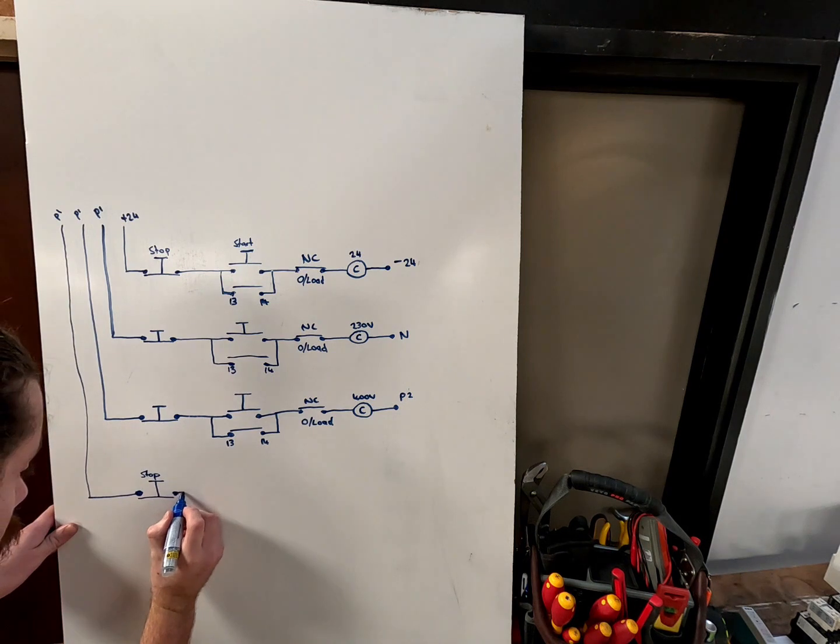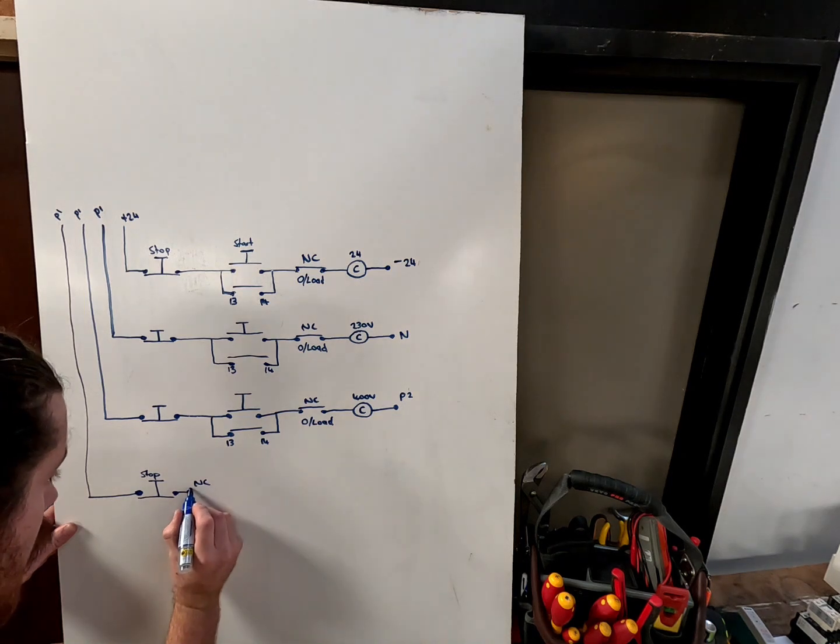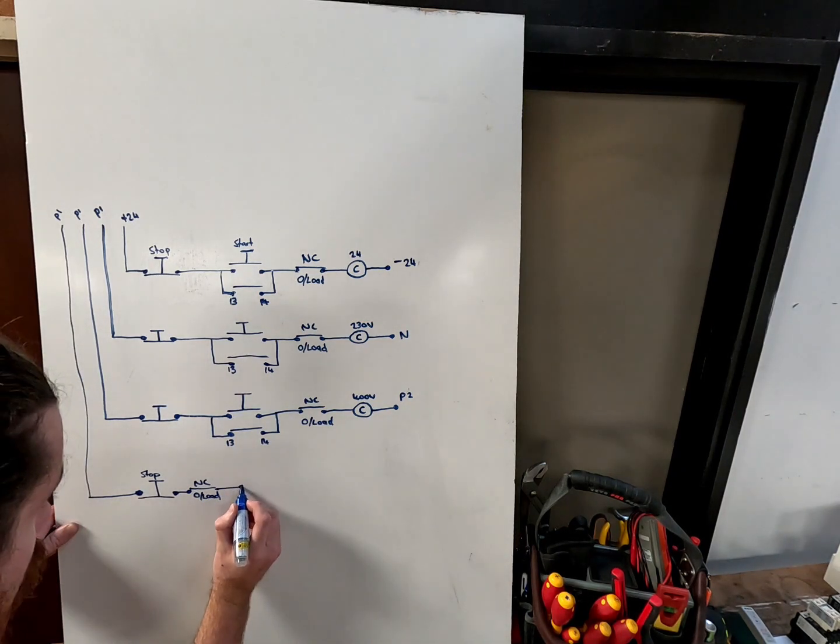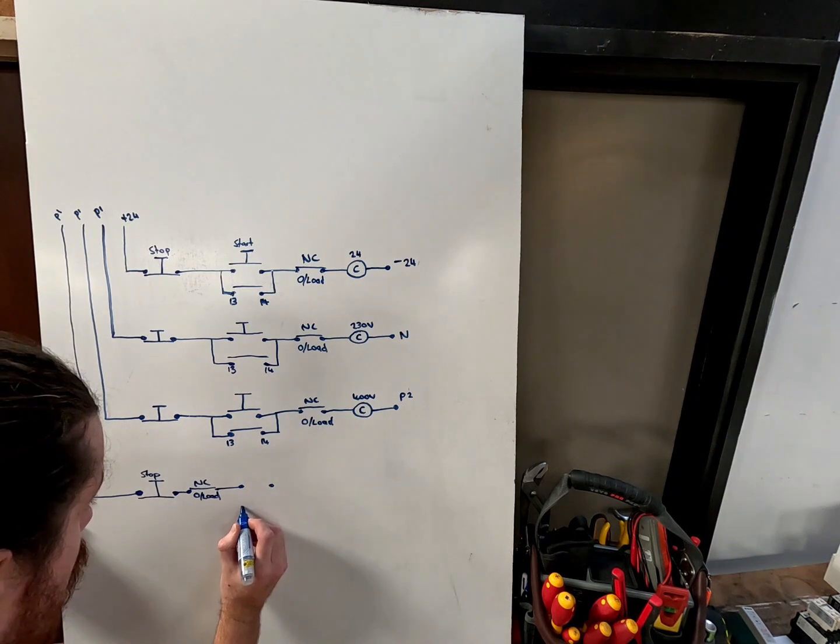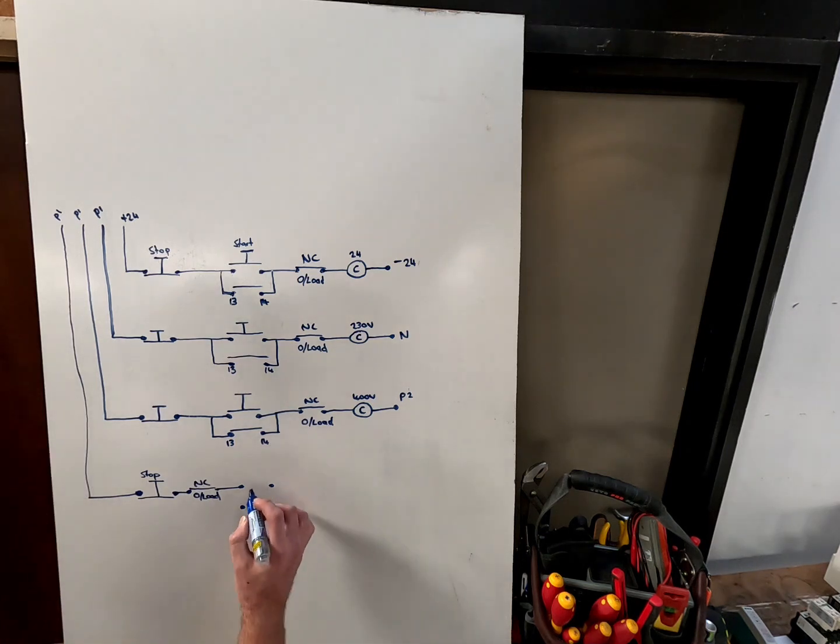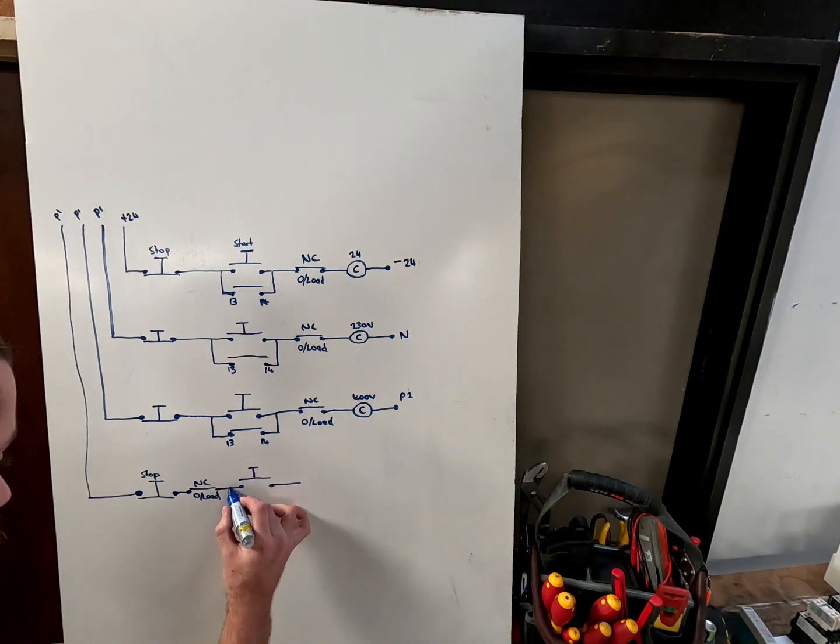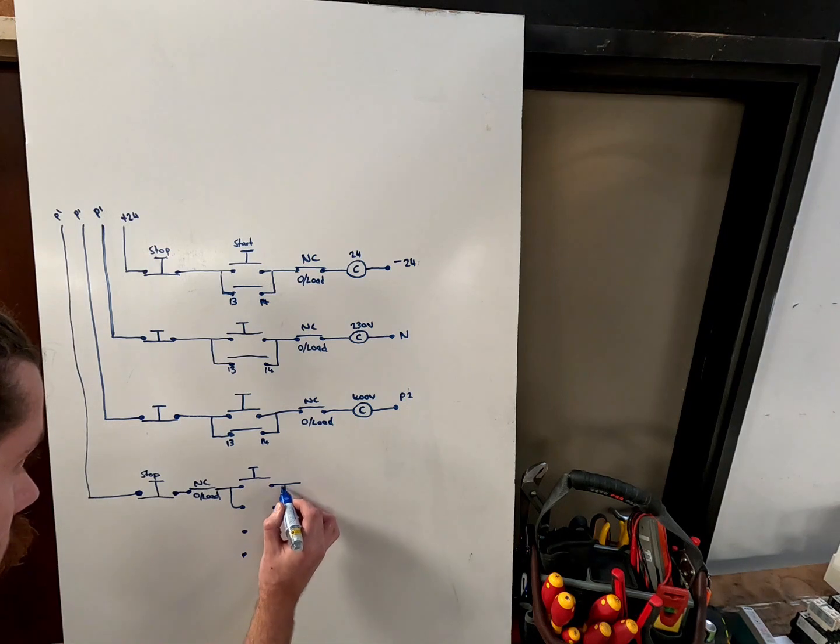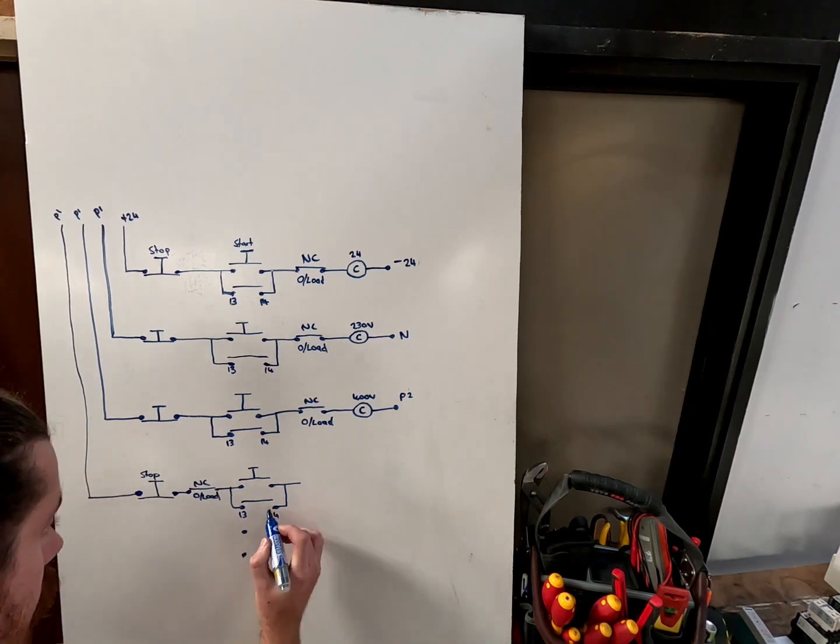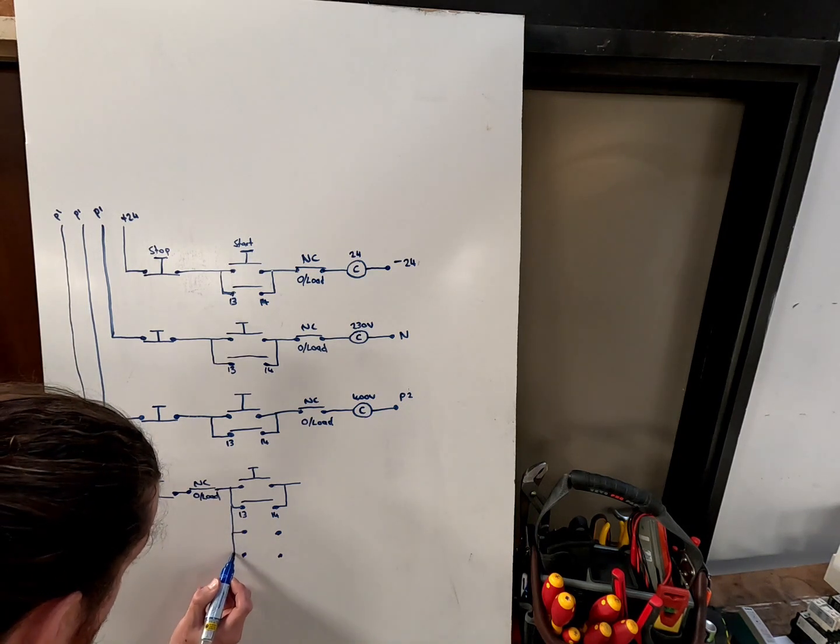Then we will go to the overload next because this is the last point where the overload can be common to both the forward and reverse. Now we branch off to our start buttons. If you remember from our last video, start buttons are in parallel and it's the same for this. So we have our start here and our auxiliary, just 13 and 14. Then we have our next start button and our next auxiliary.